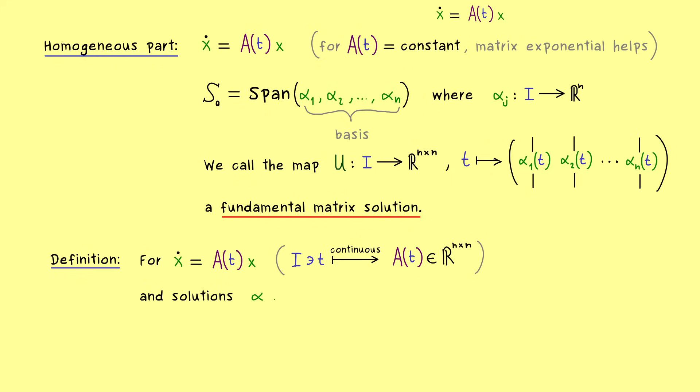However, maybe we cannot check or we don't want to check the linear independence, which means we just grab any n solutions. Now, by putting these in the columns of a matrix, we still get out a matrix solution, but maybe not a fundamental one.